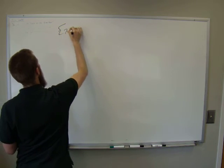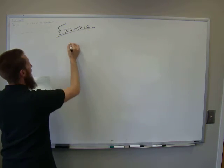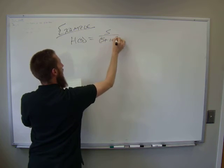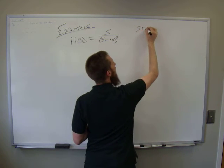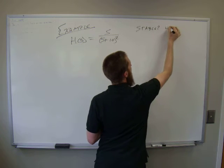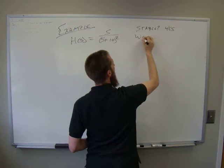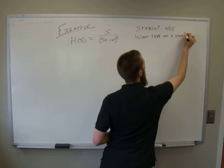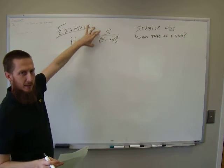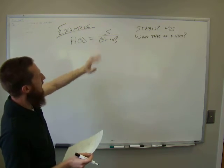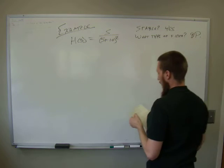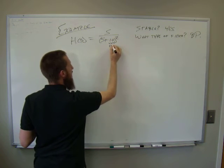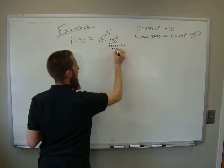Here's an example. Let's say that we have H of S equal to S divided by S plus ten, squared. First question: is this stable? Answer is yes. What type of filter? We've done Bode plots; we know the steps. We can see that this is going to be a band pass filter. What are the critical frequencies? That peak value is the critical frequency.